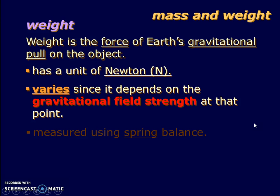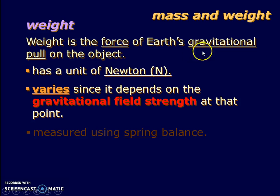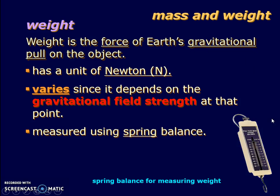Weight will change depending on the gravitational field strength at a particular point — meaning the g value differs at different planets. To measure weight, we use an instrument known as a spring balance, which the Karang Guni man would use. We also call it the Newton meter.